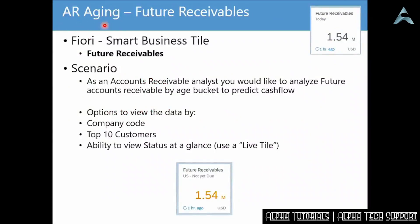This is the last app in our aging series: Future Receivables — receivables that are not yet due. As an AR analyst, you want to look at your future accounts receivable by age bucket to help predict cash flow coming in from customers. This also gives options to view data by company code, top 10 customers, just like the other tiles, and you can see status at a glance using a live tile. I'll show you how to personalize the tile to show, for instance, for the U.S. only, not-yet-due receivables totaling 1.54 million. This will be a complementary tile to use alongside overdue receivables, total receivables, and receivables by risk class.